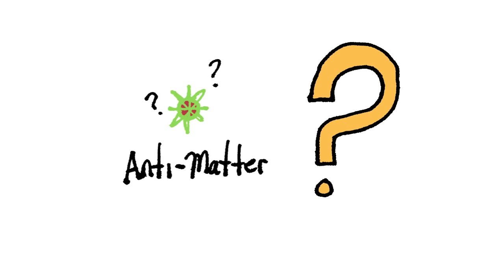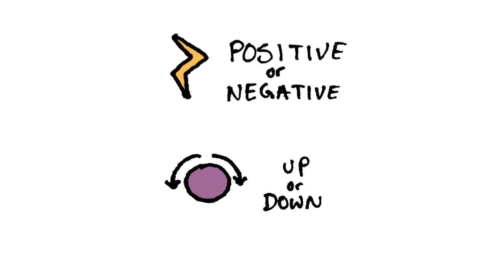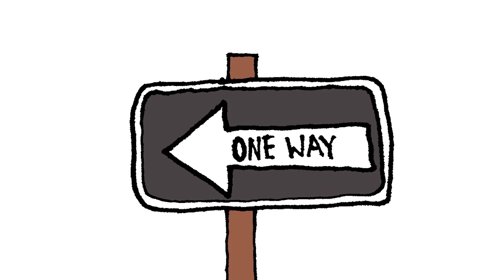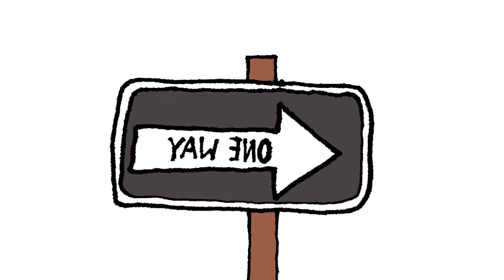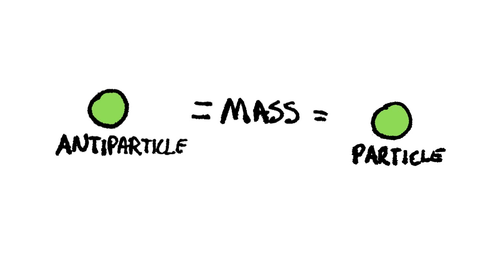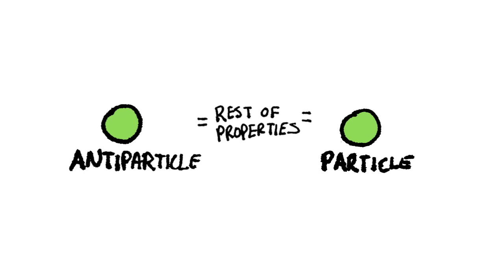So what exactly is antimatter? Well, most properties of matter have two options. Charge is positive or negative, spin is up or down, etc. The only exception is mass, which can only be one way. Antimatter is just the opposite of matter. By that we mean an antiparticle has the same mass as a normal particle, but the rest of its properties are opposite.